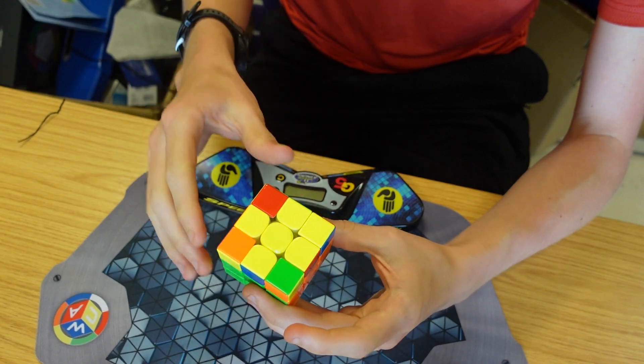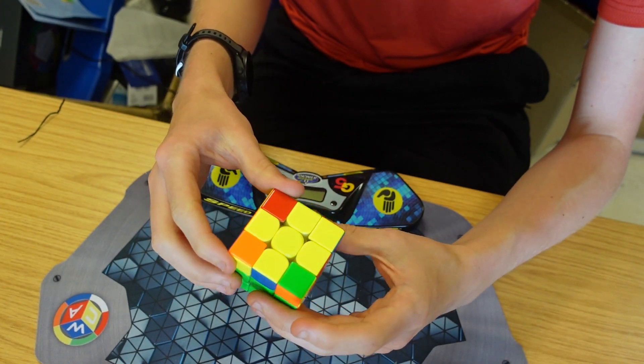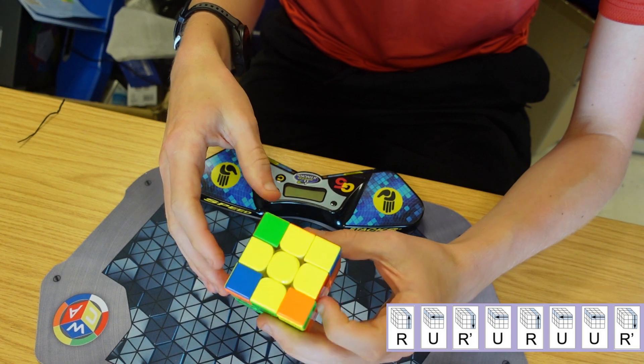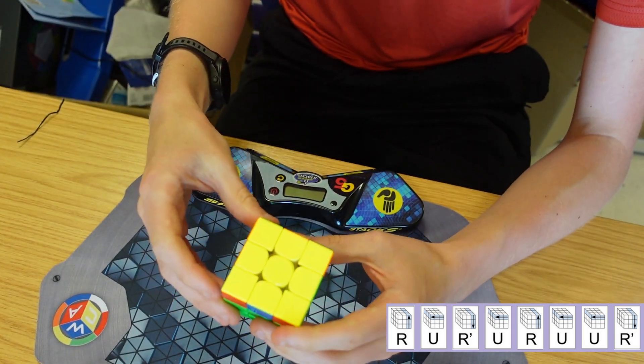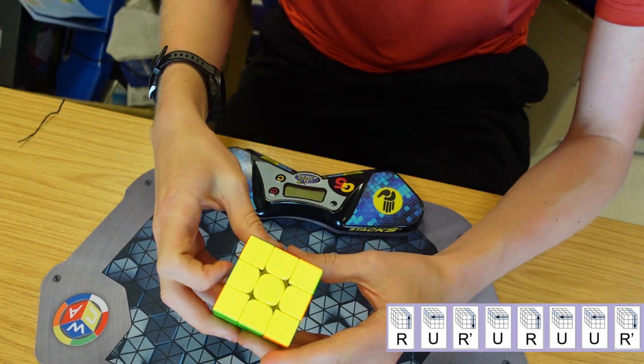Then we need to get all of this side yellow. We do this by using an algorithm called a Sune. You may have to do it a few times in a few different places, but eventually you'll get all the yellow side solved.